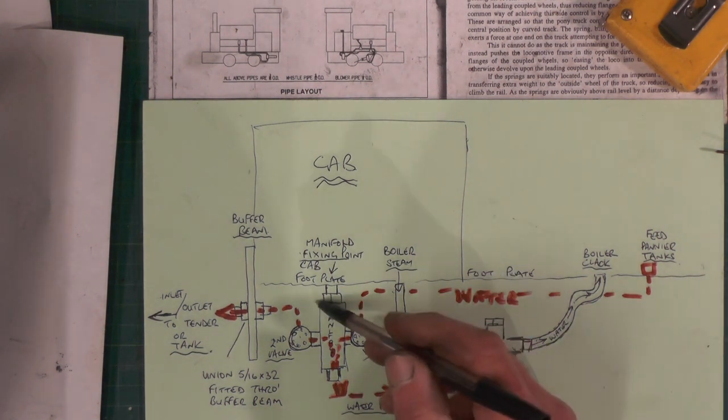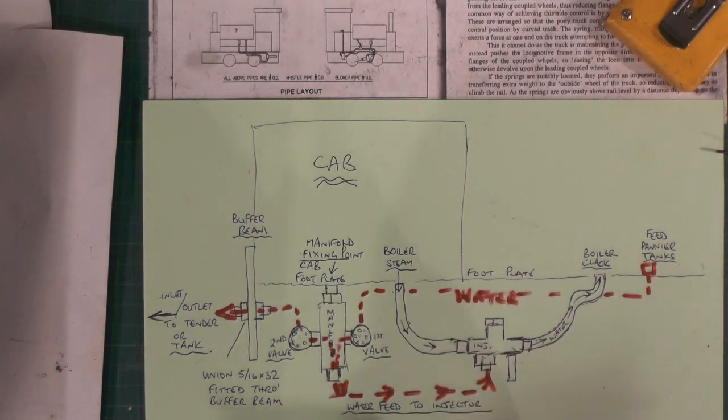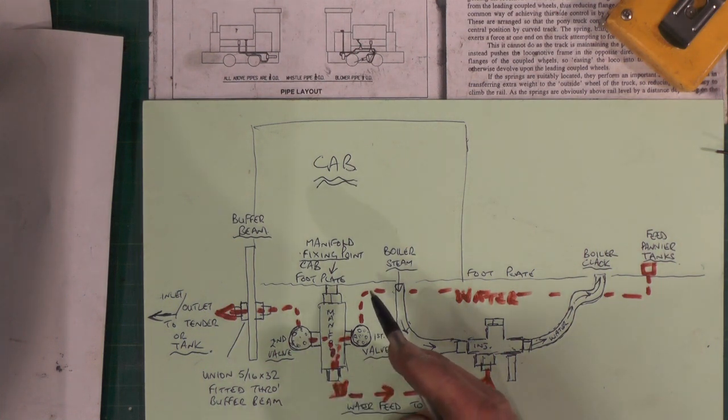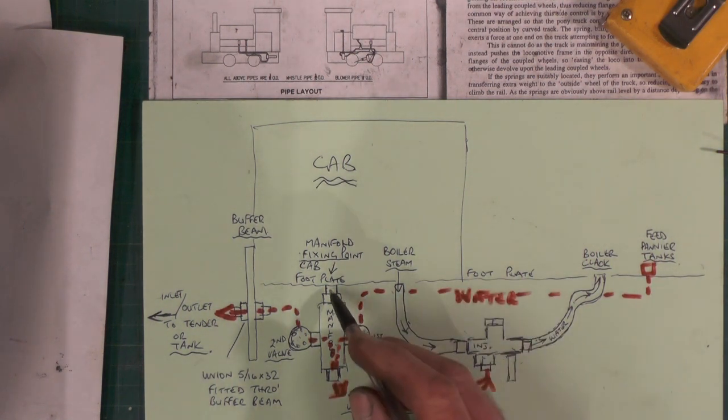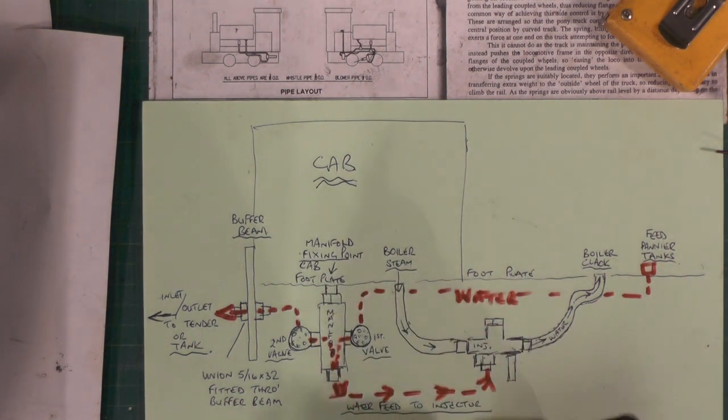What I'm going to do is make a manifold with two globe valves on, which I previously made in another video. I'll put a link to them. Then the manifold is going to be bolted to the underside of the footplate of my cab, and it's going to sit approximately there.